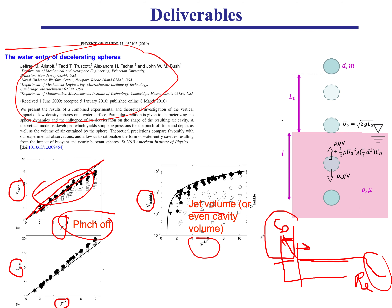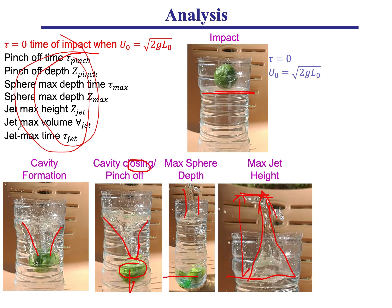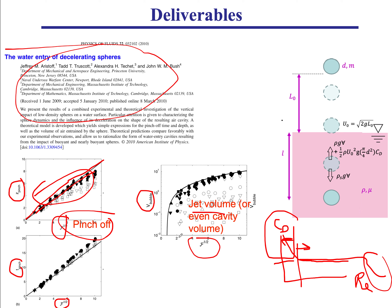This is analogous to plotting drag coefficient versus Reynolds number for a sphere or cylinder — where at high Reynolds numbers the drag coefficient becomes roughly constant. We want to plot pinch-off time, pinch-off depth, sphere maximum depth time, sphere maximum depth, z_jet, V_jet, and tau_jet all versus Froude number for each experiment, to see if the relationship holds across all 20 experiments.